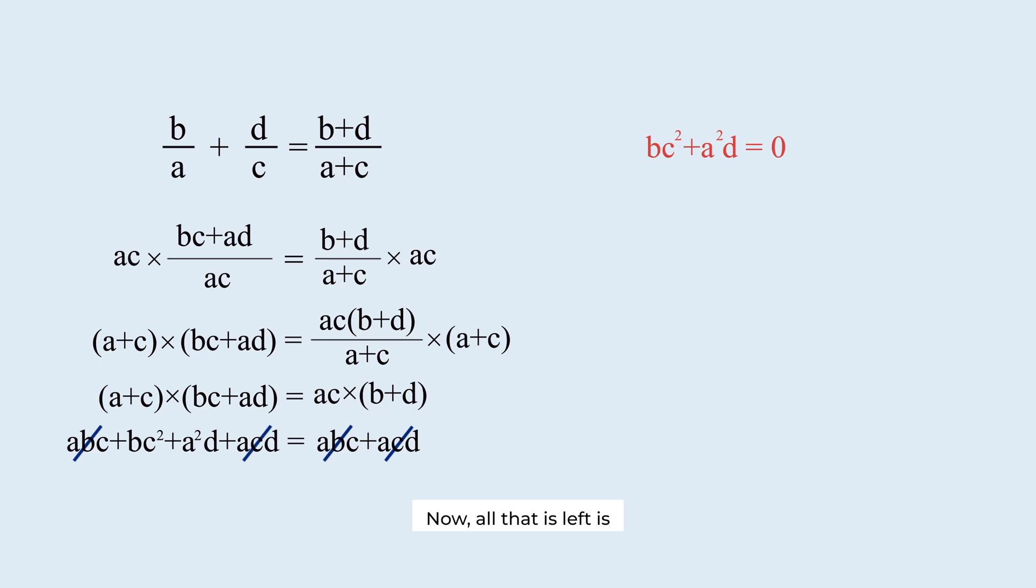Now, all that is left is to find a, b, c, and d that satisfy this equation. But here's the thing. Since a, b, c, and d are natural numbers, both b times c squared and a squared times d are greater than 0.